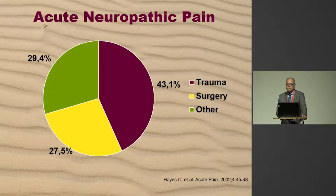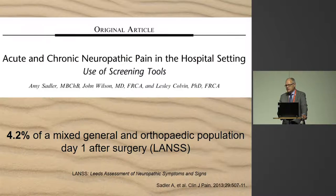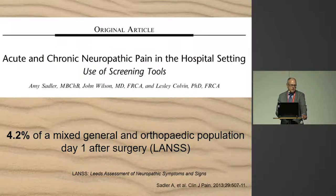Since then there have been a number of studies. Using the LANSS score — one of the established neuropathic screening tools — they looked at a mixed general and orthopedic surgical population on day one after surgery and got a relatively similar number of 4.2%.